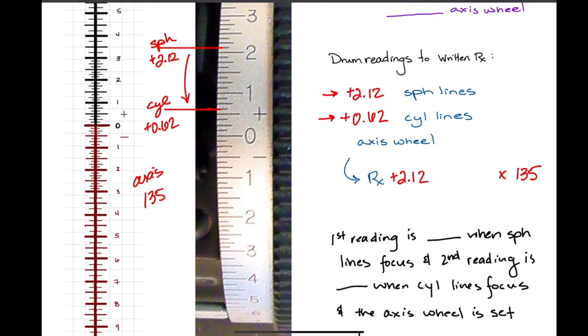All right, to get to this point, 0.62, we're going in a minus direction, so we're losing that plus power. So the distance actually here is minus 1.50. So that's the value there. If you look, when we went from this 2.12 and we headed this way, we were going towards the minus.